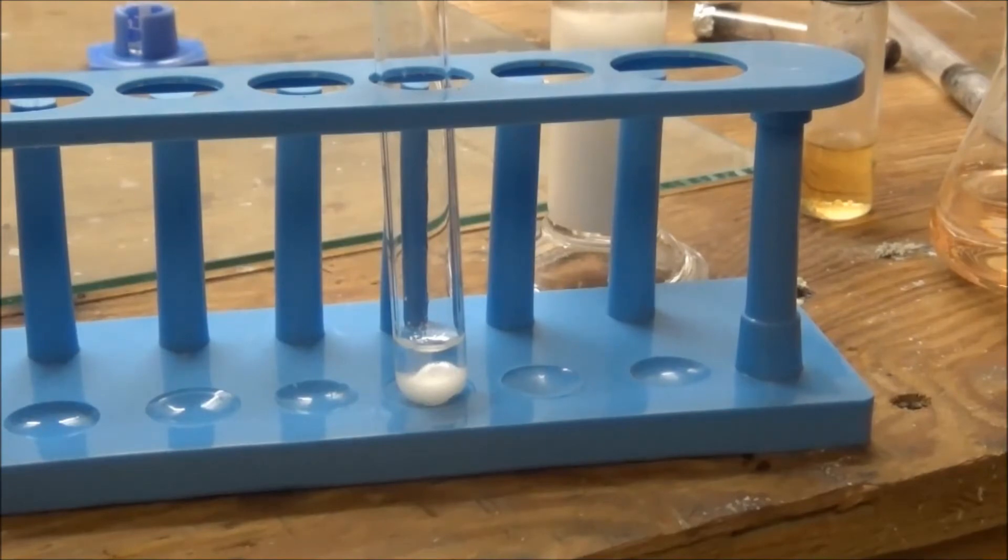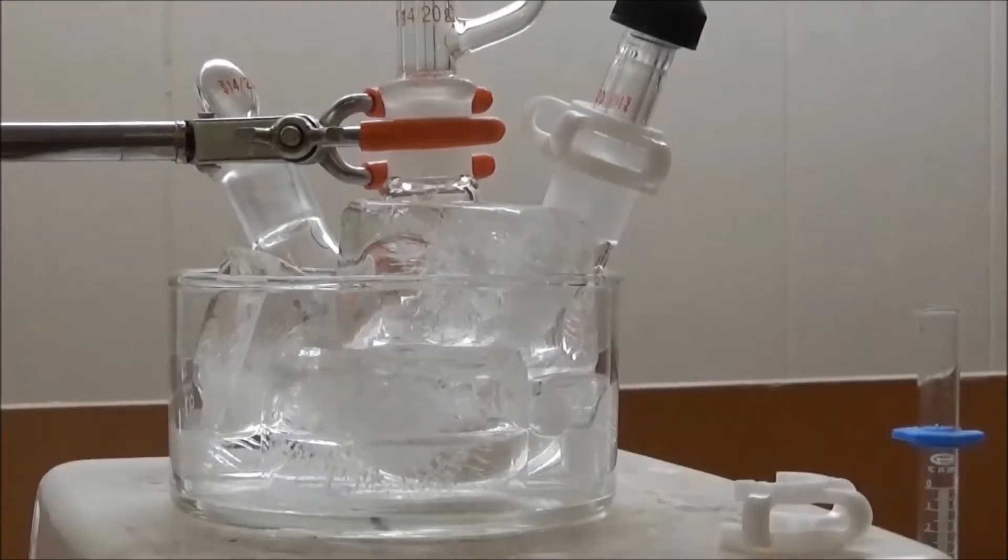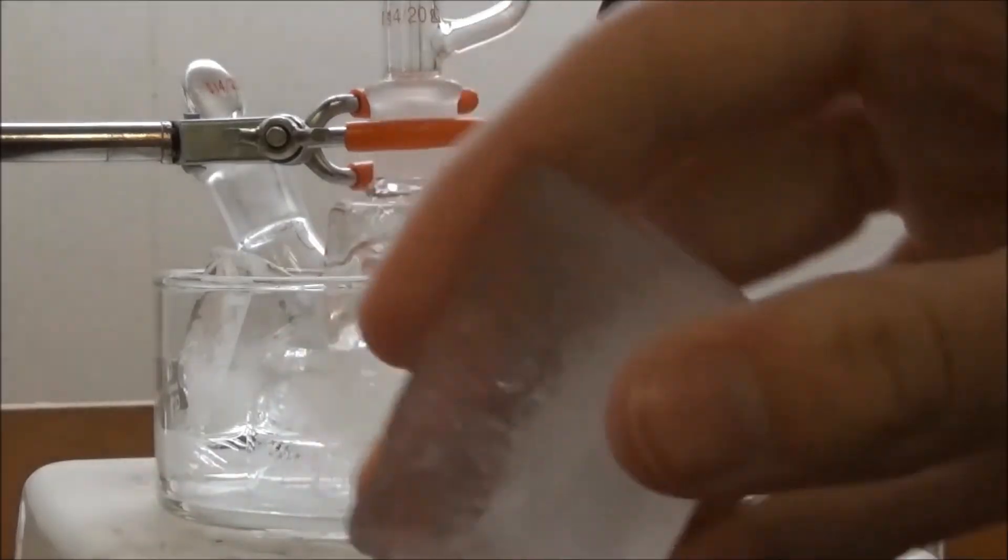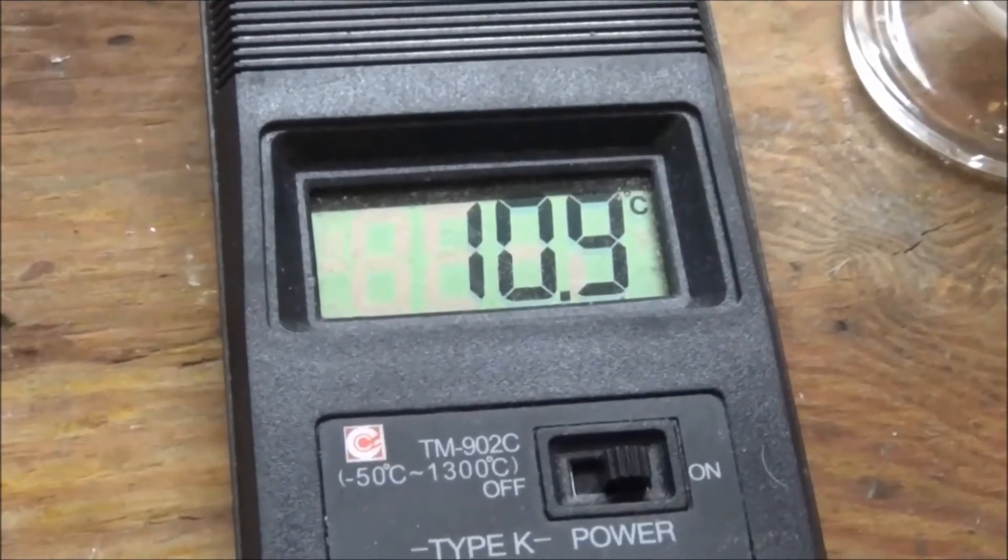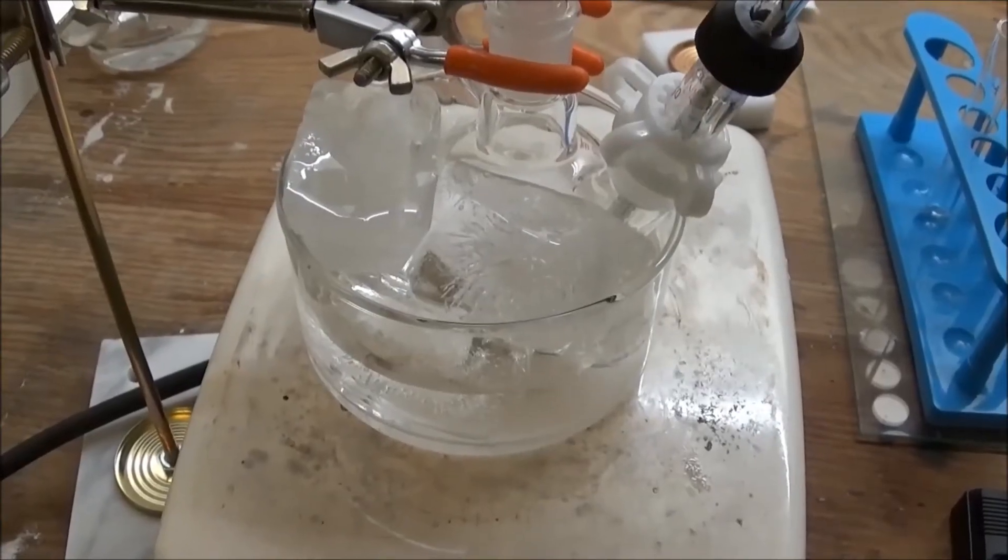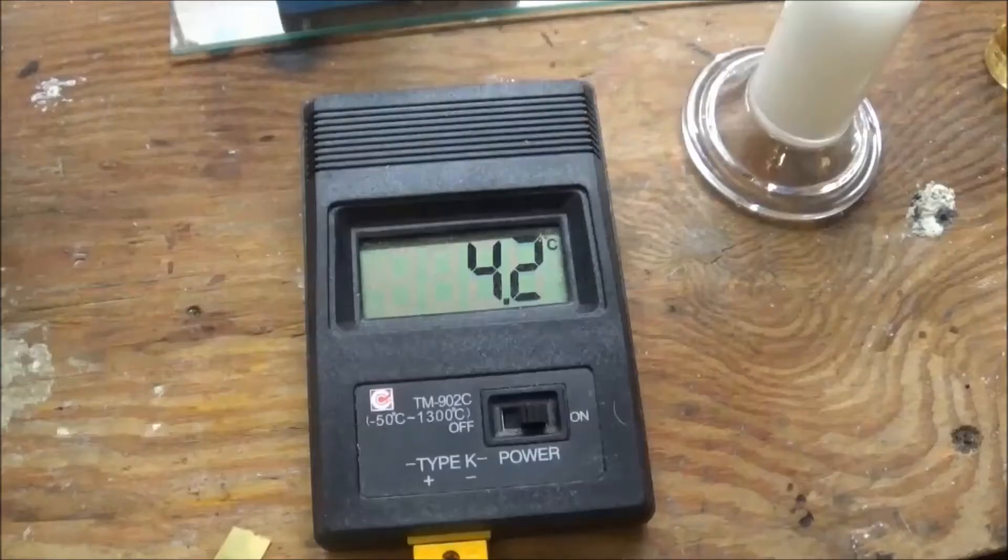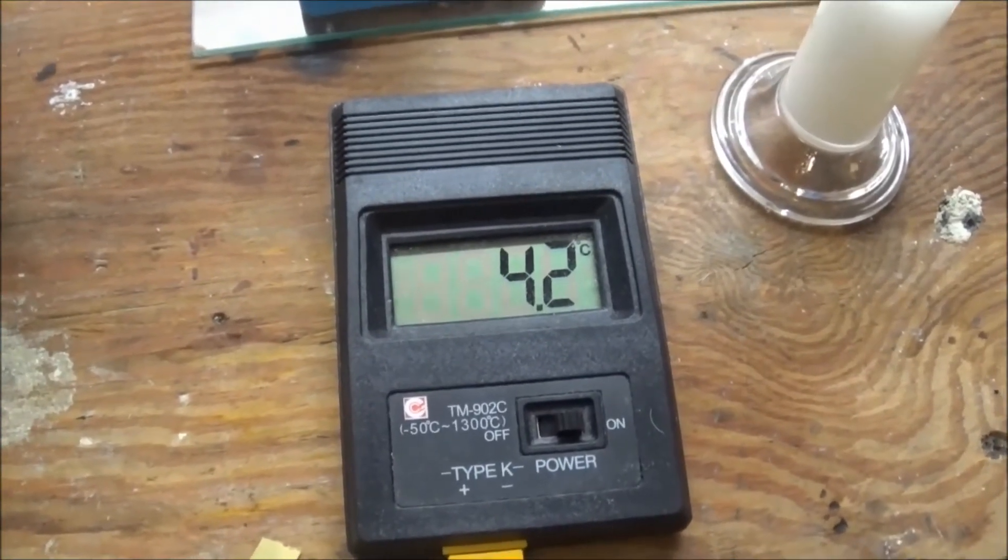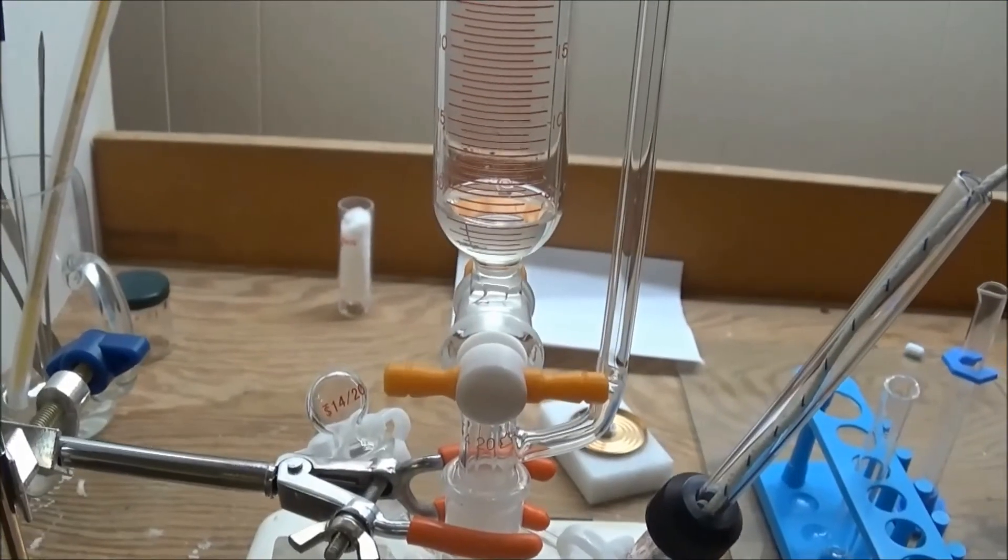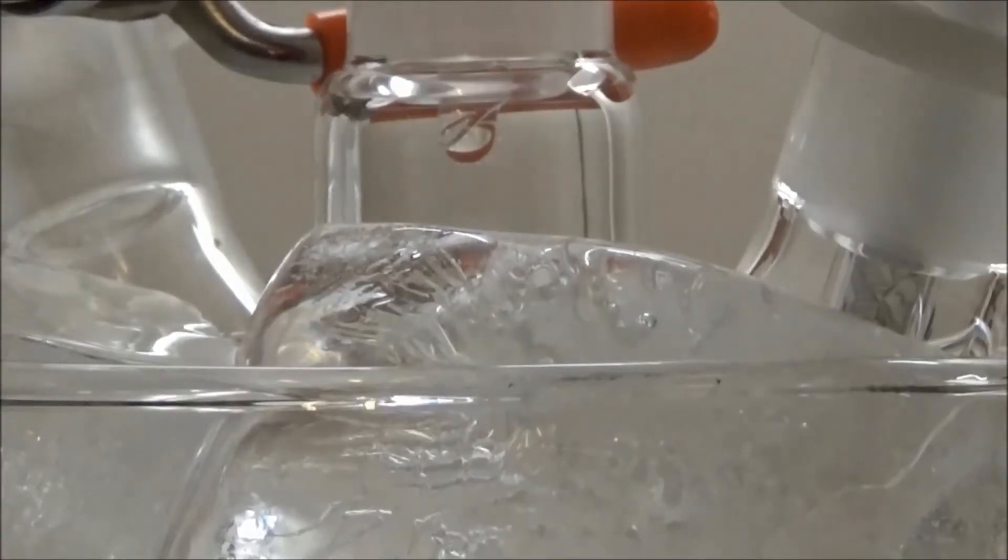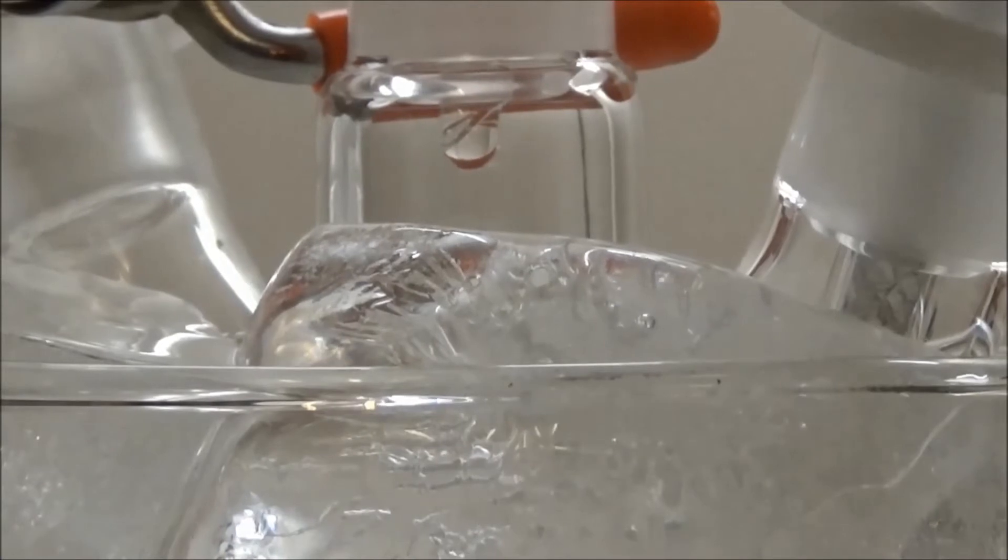While I left that dissolving, I set up an ice bath around my flask. This reaction needs to take place between 0 and 5 degrees Celsius, so I let it cool down as the sodium nitrite dissolved. Once I reached the right temperature, I added the solution of sodium nitrite to the addition funnel and began addition. I had to play with the speed a lot, turning on and off, but eventually got a good rate and could leave it going.